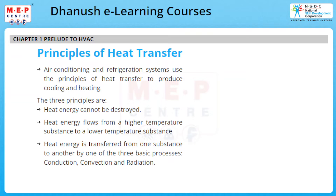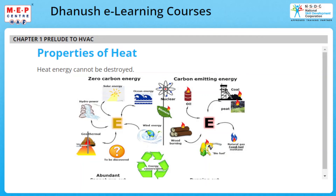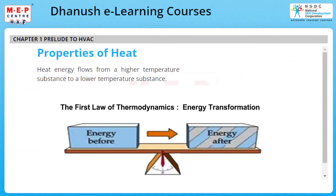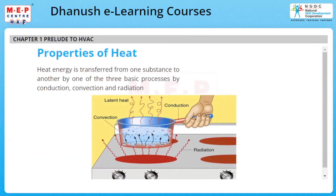Heat energy cannot be destroyed; it can be in several forms. Heat energy flows from a higher temperature substance to a lower temperature substance. Energy is balanced before and after transformation or phase change. Heat energy is transferred from one substance to another by one of the three basic processes: by conduction, convection, and radiation. This is the best example of showing all modes of heat transfer.